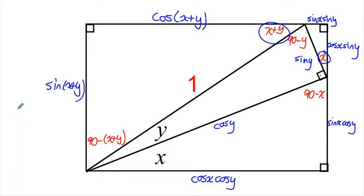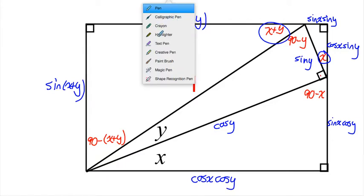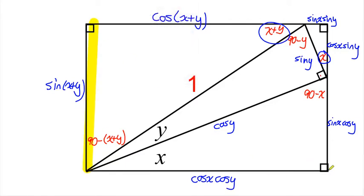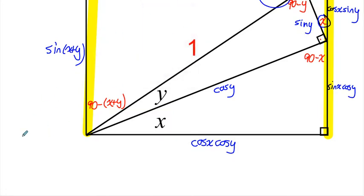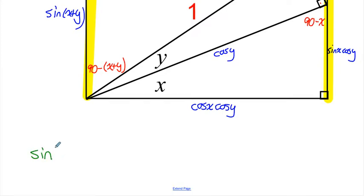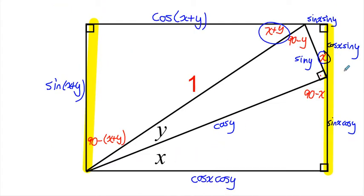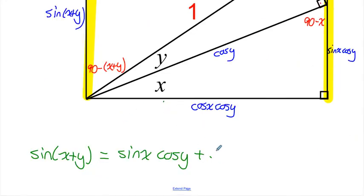Now we can use properties of rectangles to get expressions for our compound angle formulas. Notice, if this whole side length is equal to sin of x plus y, then since it's a rectangle, the opposite side over here must be equal to the exact same length. So sin of x plus y must equal the sum of those two sides. So our identity is: sin of x plus y equals sin x cos y plus cos x sin y.